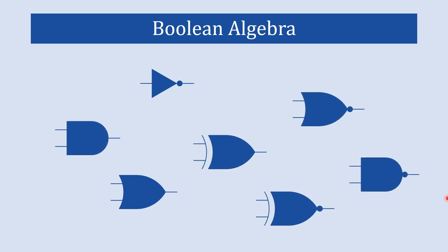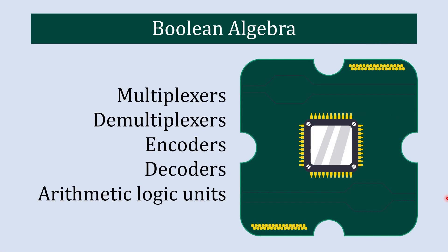Boolean equations are also used to design and define the functions of logic gates such as AND gate, OR gate, NOT gate, NAND gate, NOR gate, XOR gate, and XNOR gate. These are the building blocks of digital circuits. More complex digital circuits like multiplexer, demultiplexer, encoder, decoder, and ALU (arithmetic logic units) are also designed using Boolean equations.